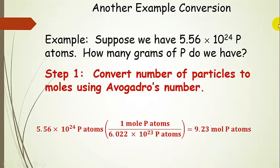Let's look at another example conversion. We have 5.56 times 10 to the 24 phosphorus atoms. How many grams of phosphorus do we have? How big a pile is it? We really don't know until we do the calculation.